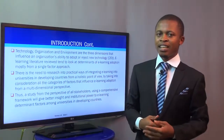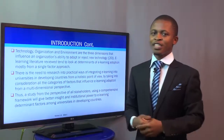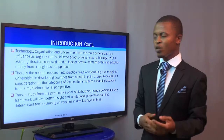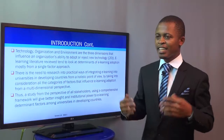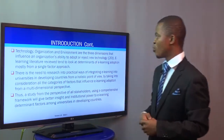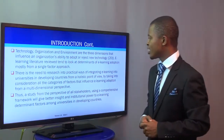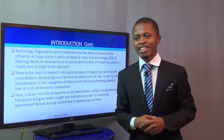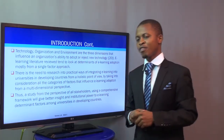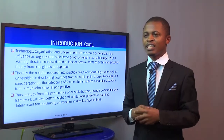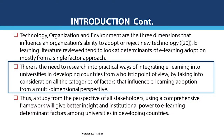E-learning research papers indicated that most research deals with only one or two of these stakeholders. For total adoption to occur and to study adoption holistically, you have to look at three major factors: the technological factors, the organizational factors, and the environmental factors. However, e-learning literature tends to look at the determinants of e-learning adoption mostly from a single-factor approach, without putting these three things together. There is a need for research into practical ways of integrating e-learning into universities in developing countries from a holistic, multidimensional perspective.